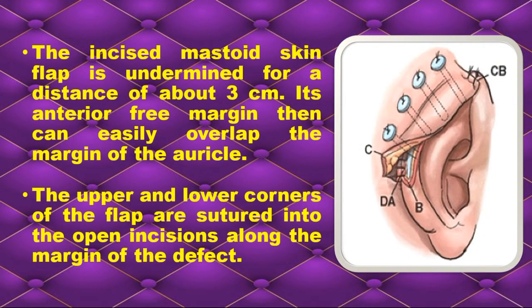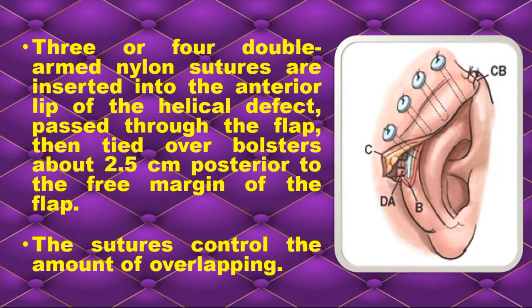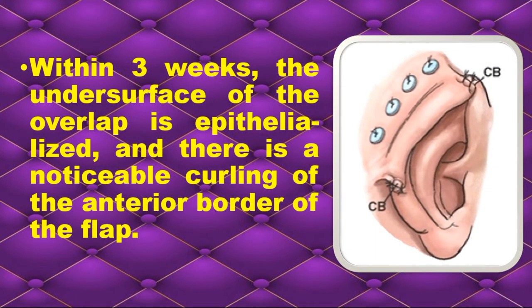The incised mastoid skin flap is undermined for a distance of at least 3 cm. Its anterior free margin can then easily overlap the margin of the auricle. The upper and lower corners of the flap are sutured into the open incisions along the margin of the defect. Three or four double-armed nylon sutures are inserted into the anterior lip of the helical defect, passed through the flap, then tied over bolsters about 2.5 cm posterior to the free margin of the flap. The sutures control the amount of overlapping. Within three weeks, the undersurface of the overlap is epithelialized, and there is a noticeable curling of the anterior border of the flap.